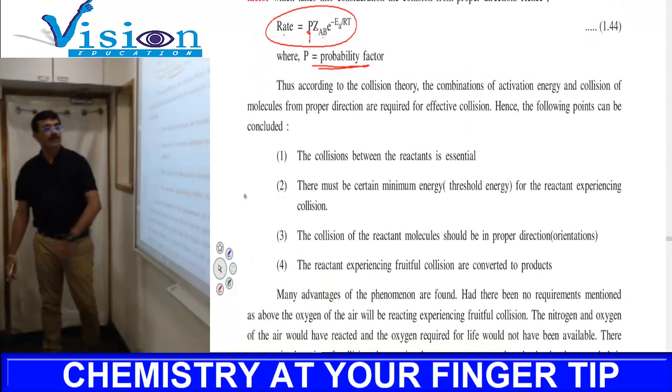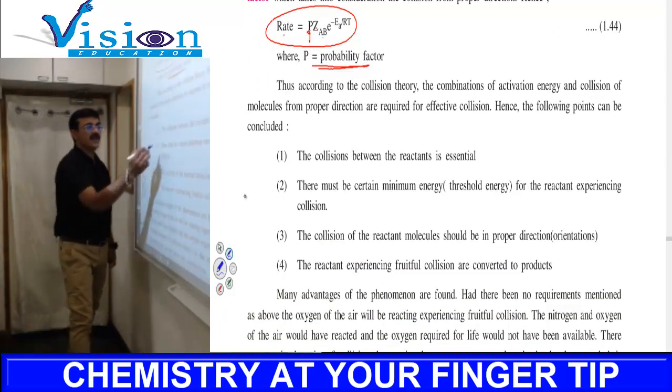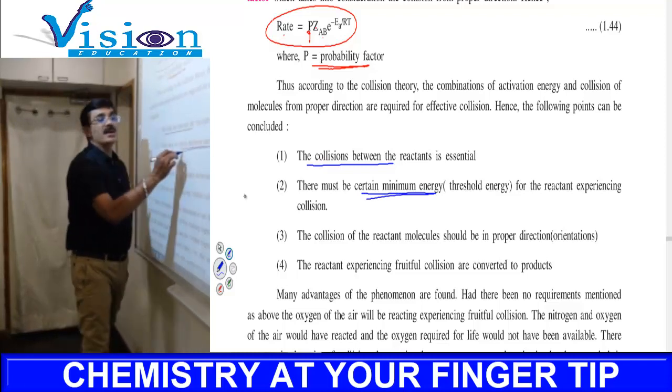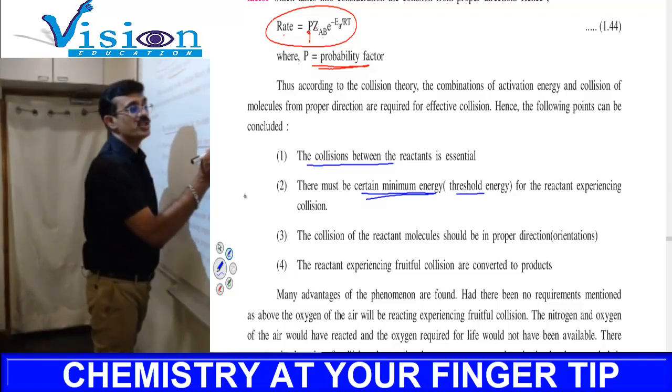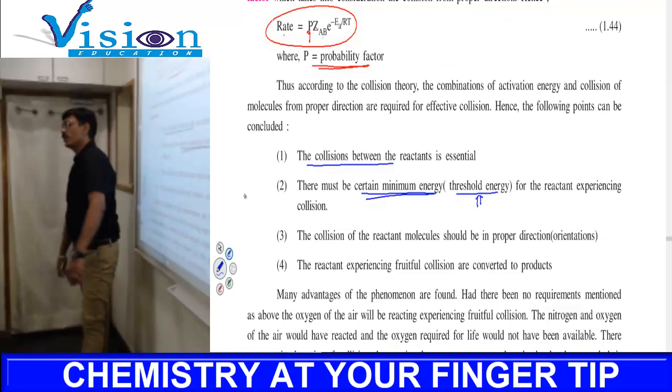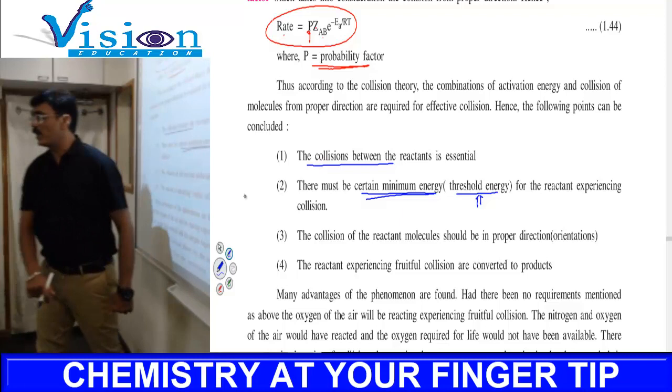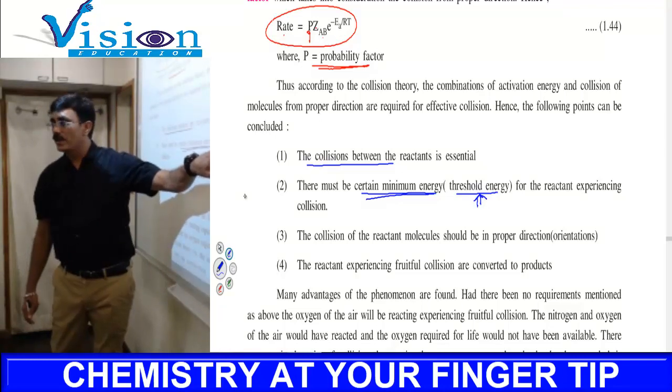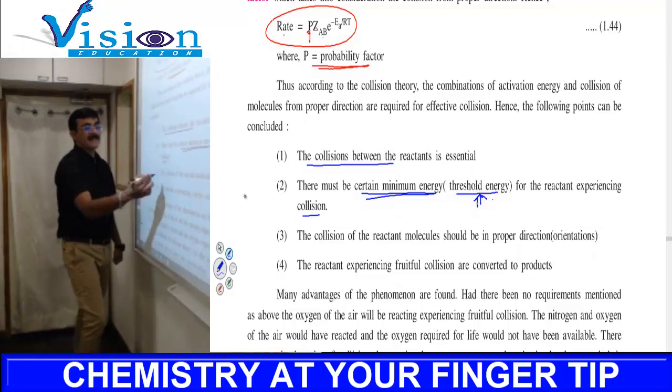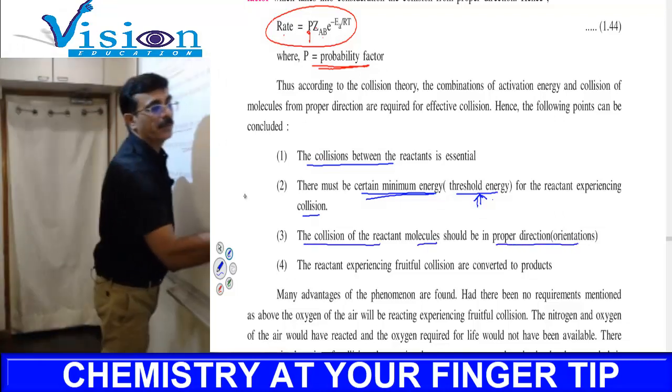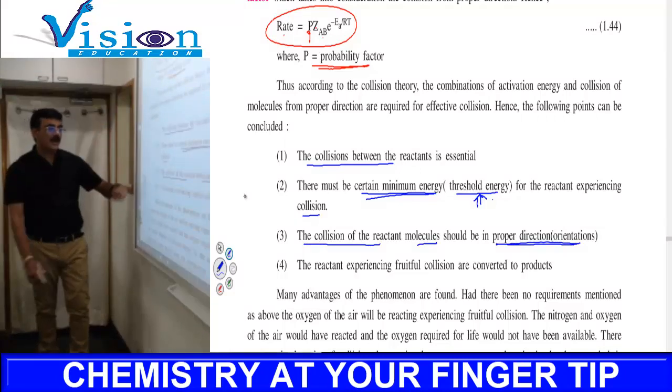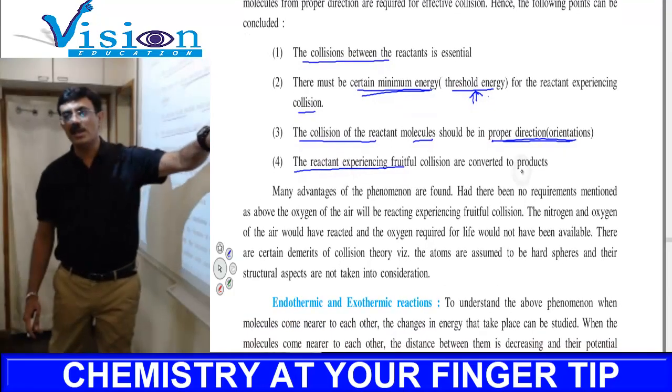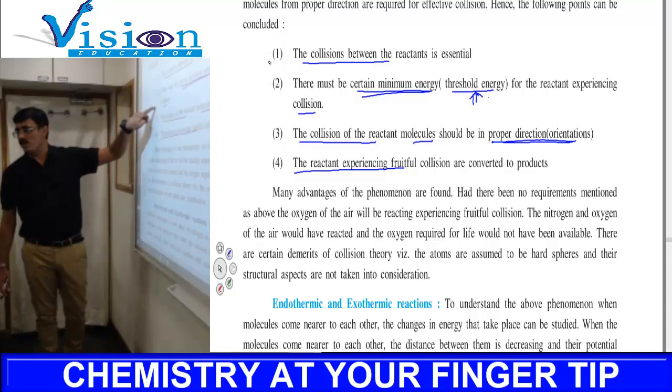The reason is that all collisions do not result in products. Those collisions in which molecules collide with sufficient kinetic energy—that means threshold energy—and proper direction, then bonds of reactants break and bonds of products are formed. Such collisions are known as effective or fruitful collisions.